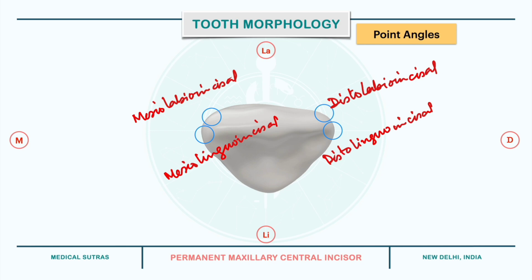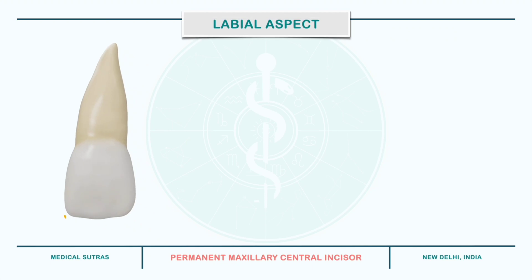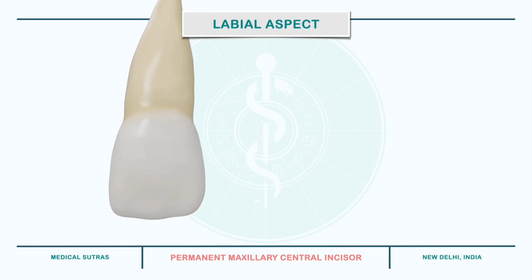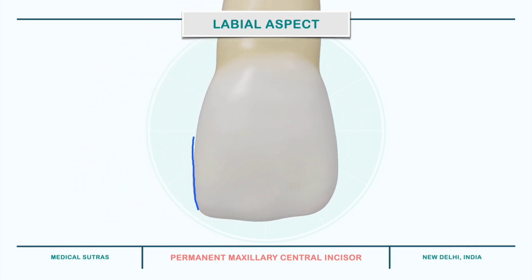Now let's study the tooth from different aspects. Starting with the labial aspect, the labial surface of the crown is usually smooth and appears symmetric and rectangular in shape, with the cervicoincisal length greater than the mesiodistal width. In a newly erupted central incisor, we can see mamelons on the incisal ridge and developmental lines separating the tooth surface into 3 parts.